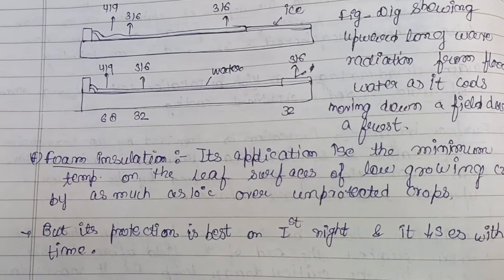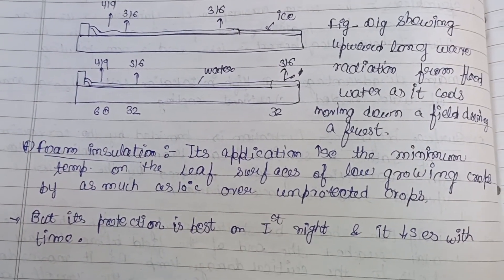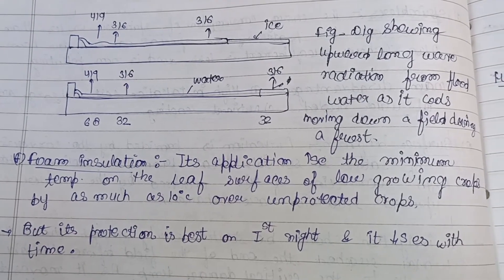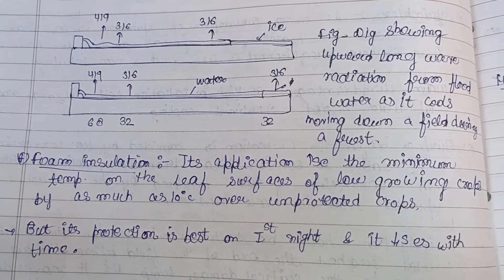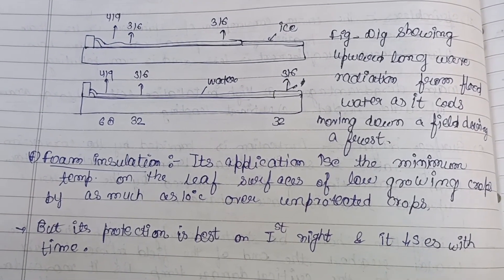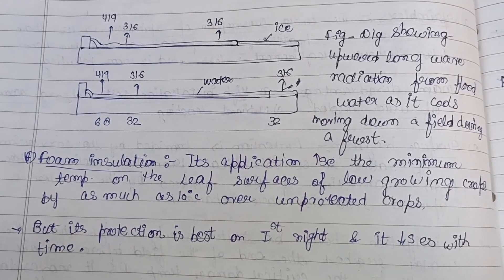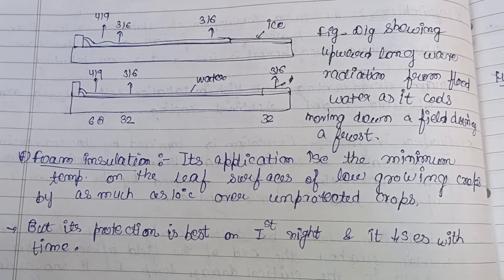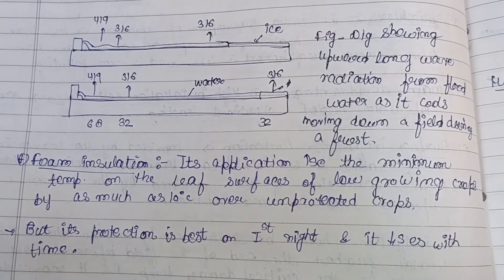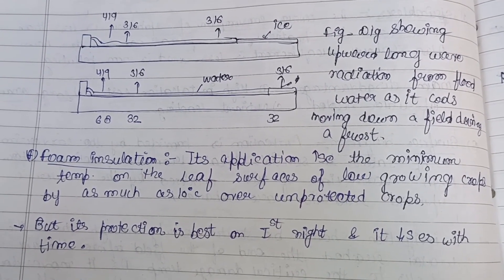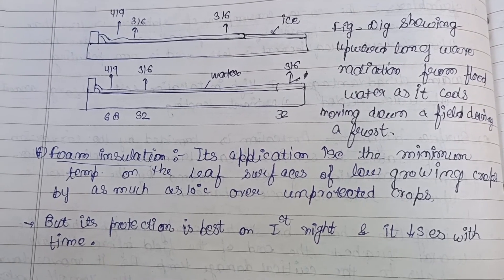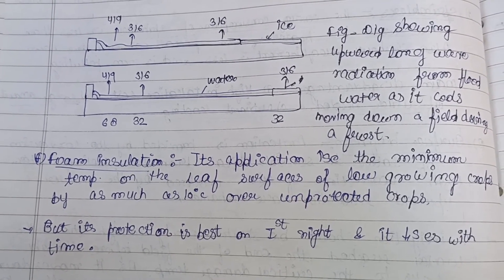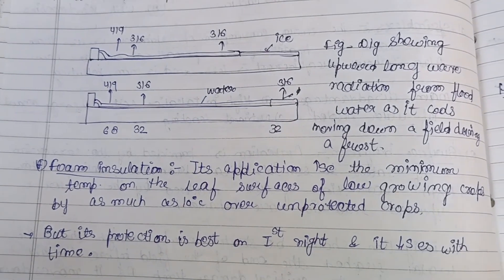The last method is foam insulation. Its application can increase the minimum temperature on leaf surfaces of low-growing crops by as much as 10 degrees Celsius compared to unprotected crops. However, its protection is based on the first night and decreases over time, so it is not highly effective long-term. That covers all the frost protection methods for plants.